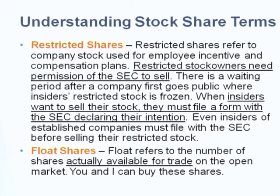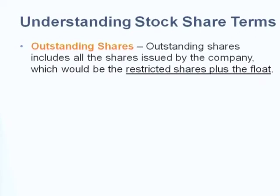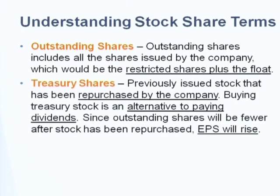Outstanding share means the total shares that you can trade - it equals issued share, which is how many shares you have issued in total. It equals restricted share plus the float. Treasury share means the share that the company keeps and does not issue to the public - maybe they buy back the stock from the market, and that stock goes back to the treasury shares.